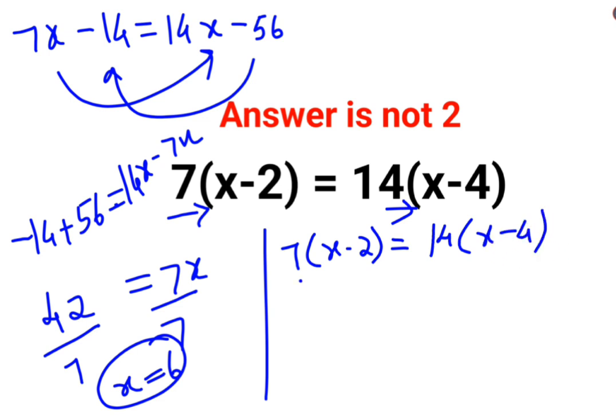So first thing what you can do is directly divide both the numbers by 7. It is so easy. So this gets cancelled. Here this is 1 and 2. So now I have x minus 2 equals to 2x minus 8.